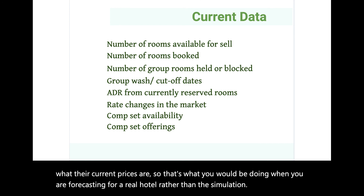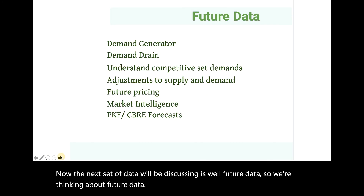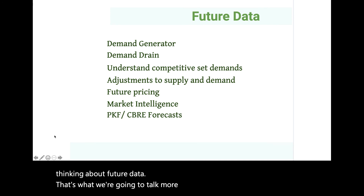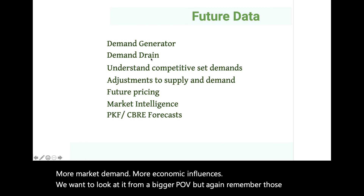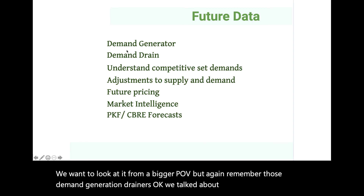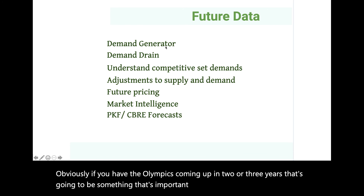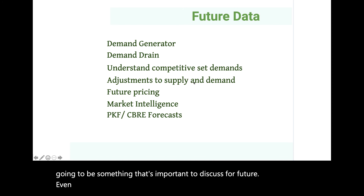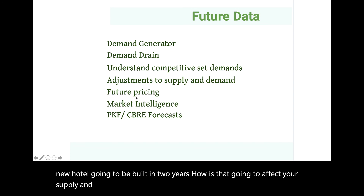The next set of data is future data. When thinking about future data, we look at broader market demand and economic influences. Remember those demand generators and drainers from historical data — the same applies here. If the Olympics are coming up in two or three years, that's important for future planning. Also consider competitive supply and demand: if a new hotel is going to be built in two years, how is that going to affect your supply and demand?